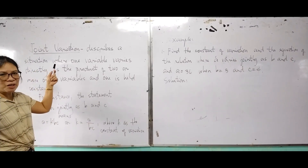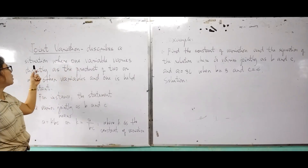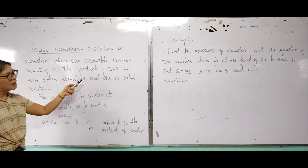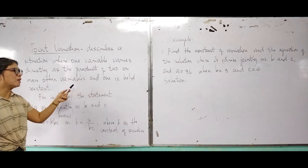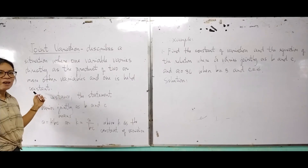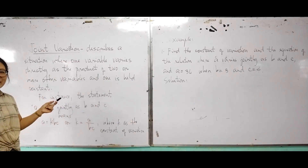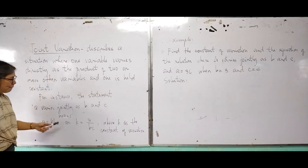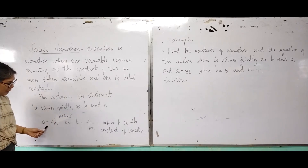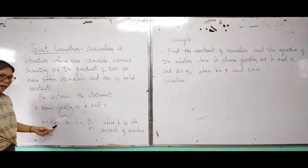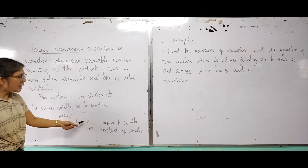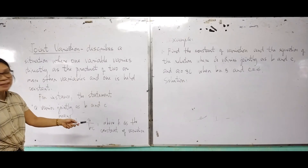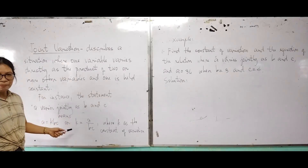What is joint variation? It describes a situation where one variable varies directly as the product of two or more other variables and one is held constant. For instance, the statement 'A varies jointly as B and C' means A equals K times B times C, or K equals A divided by BC, where K is the constant of variation.